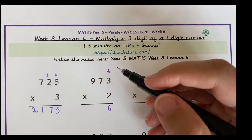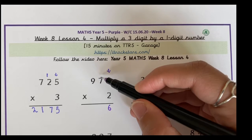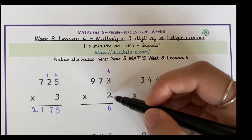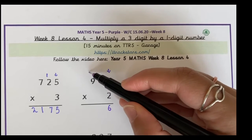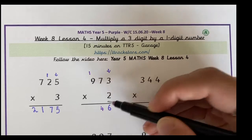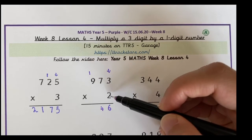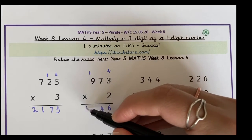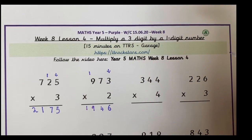Again, follow the steps for the next question if you are not sure. Have a go with me — can you work it out correctly? And don't forget to add on the digit that you have regrouped into that column.